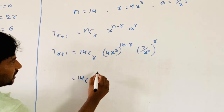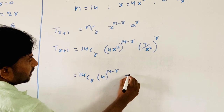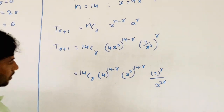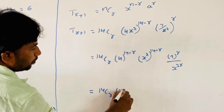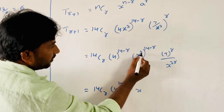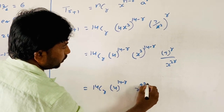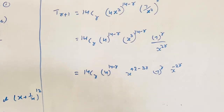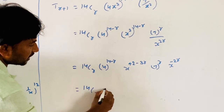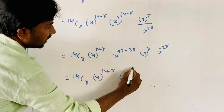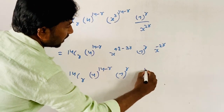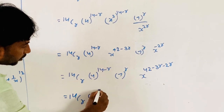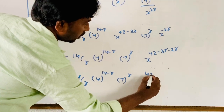Expanding: T(r+1) = 14Cr · 4^(14−r) · x^(3(14−r)) · 7^r · x^(−2r) = 14Cr · 4^(14−r) · 7^r · x^(42−3r) · x^(−2r). Since the bases are equal, adding the exponents: T(r+1) = 14Cr · 4^(14−r) · 7^r · x^(42−5r).